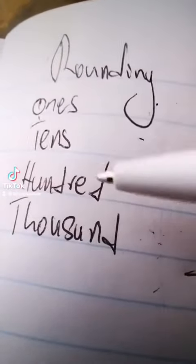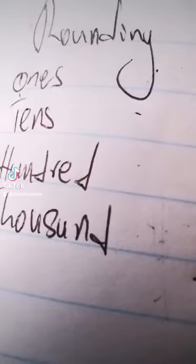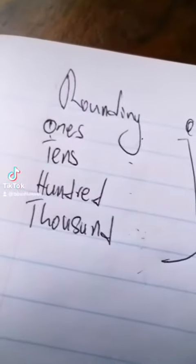Ones has only one number, tens has two numbers, hundred has three numbers, thousand has four numbers. This is going to help you to determine the value which you are being asked to change.